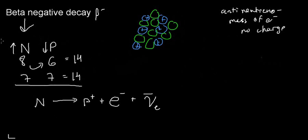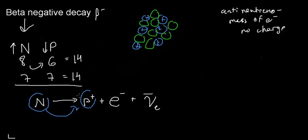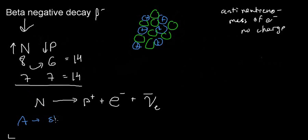Let's see how this affects the element. I'm having one neutron turn into one proton, so I'm not losing the total number of nucleons. My mass number A stays the same — it's not like alpha decay where particles leave the nucleus.